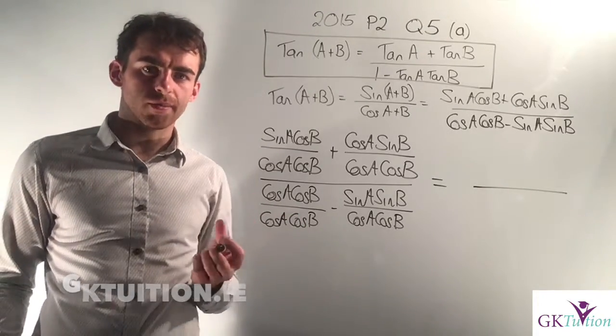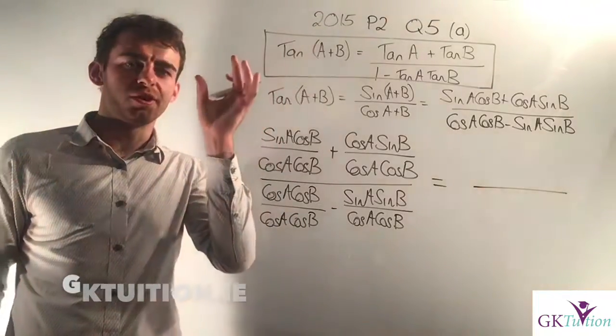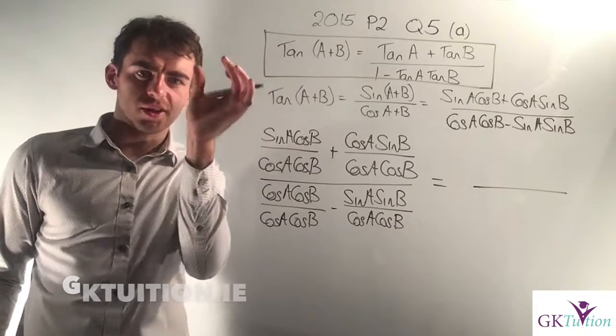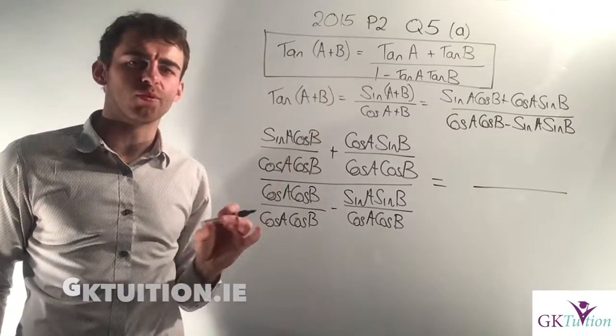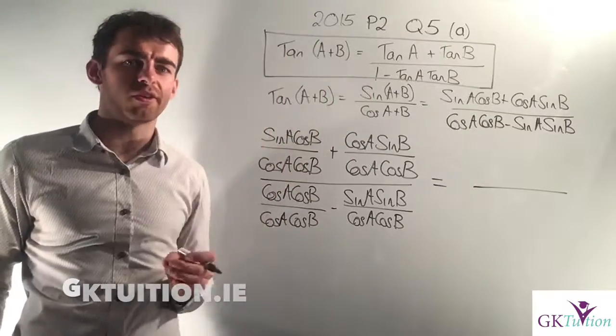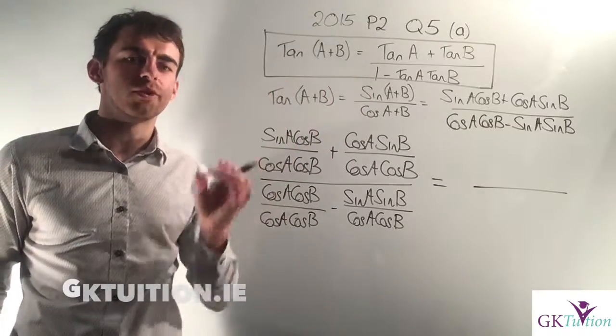When we were going through trigonometry in class we handed out a two-page document that had all of your proofs for trigonometry in it. This was the 7th or 8th one on that page. Make sure you're clear on this. It has come up a number of times in the Leaving Cert.